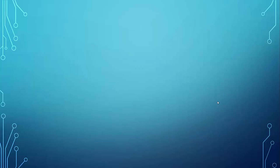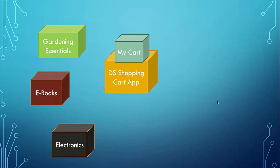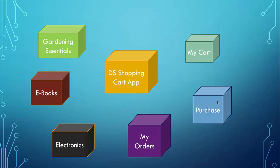Let us take a basic example of a shopping cart, which we will use throughout our tutorial. In our shopping cart app, we have basic components like a products component — which includes gardening essentials, e-books, and electronics — and we also have the my cart, purchase, and my orders components.